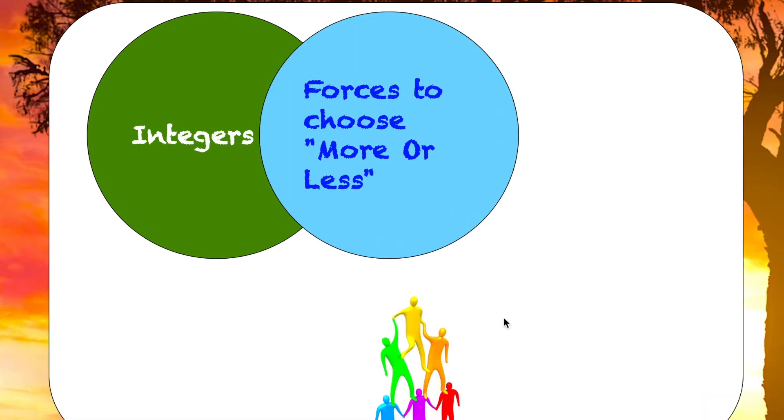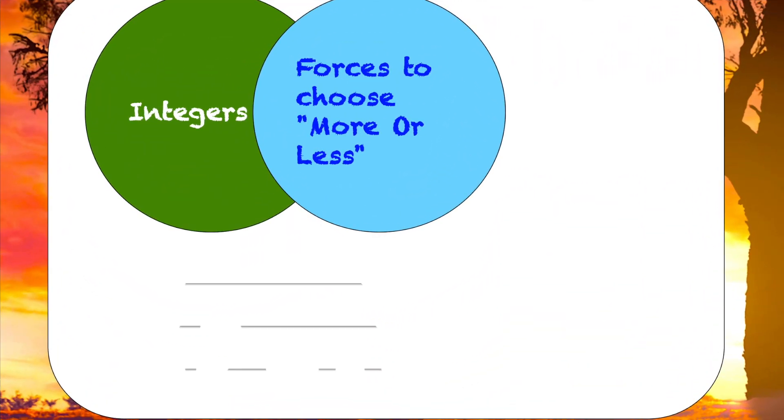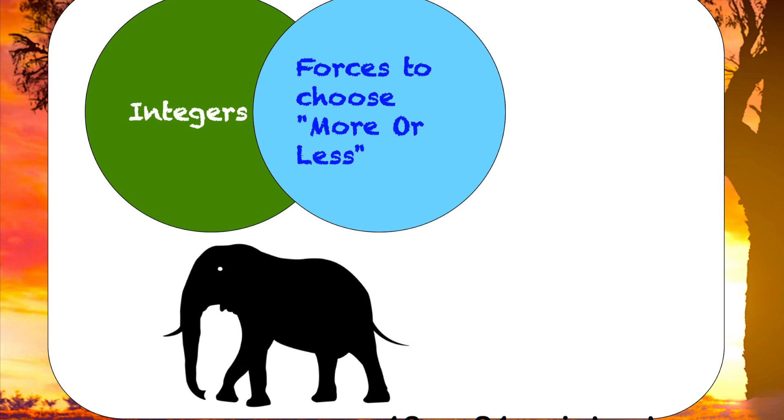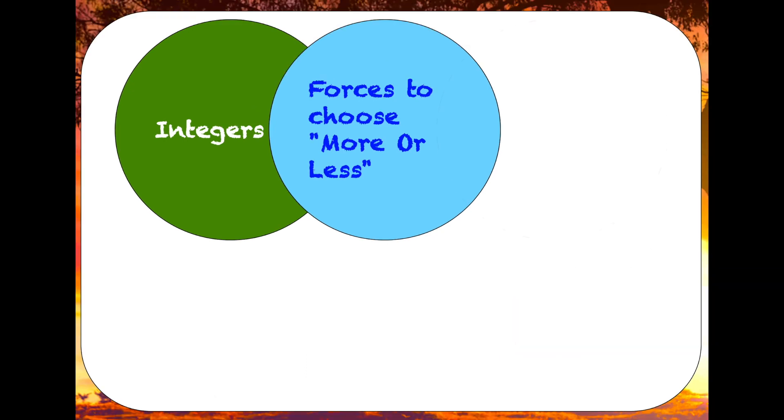Fibonacci sequence forces your team to make a choice, either more or less. When faced with a large task, it may be a 13 point story or 21 point story. There is no number in between. This helps your team to group and differentiate the size of the task.